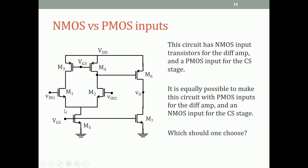The circuit as drawn uses NMOS input transistors in the differential amplifier, which means the output of the first stage connects to a PMOS transistor as the second-stage driver. One can of course imagine the reverse: a PMOS-input differential amplifier followed by an NMOS common-source stage. The question is which configuration is better.